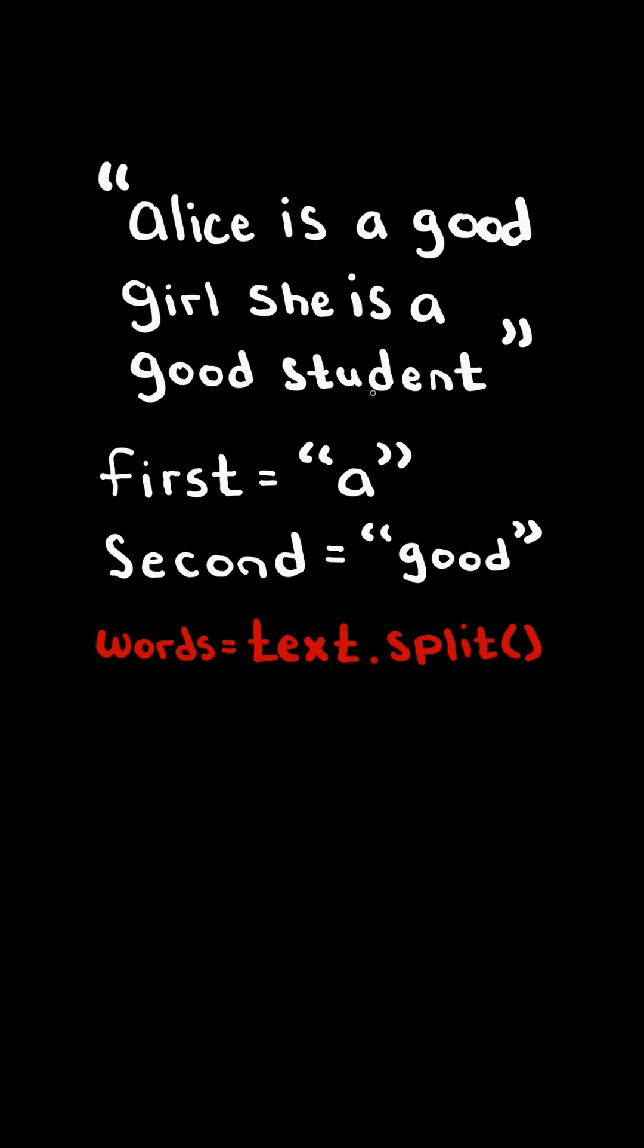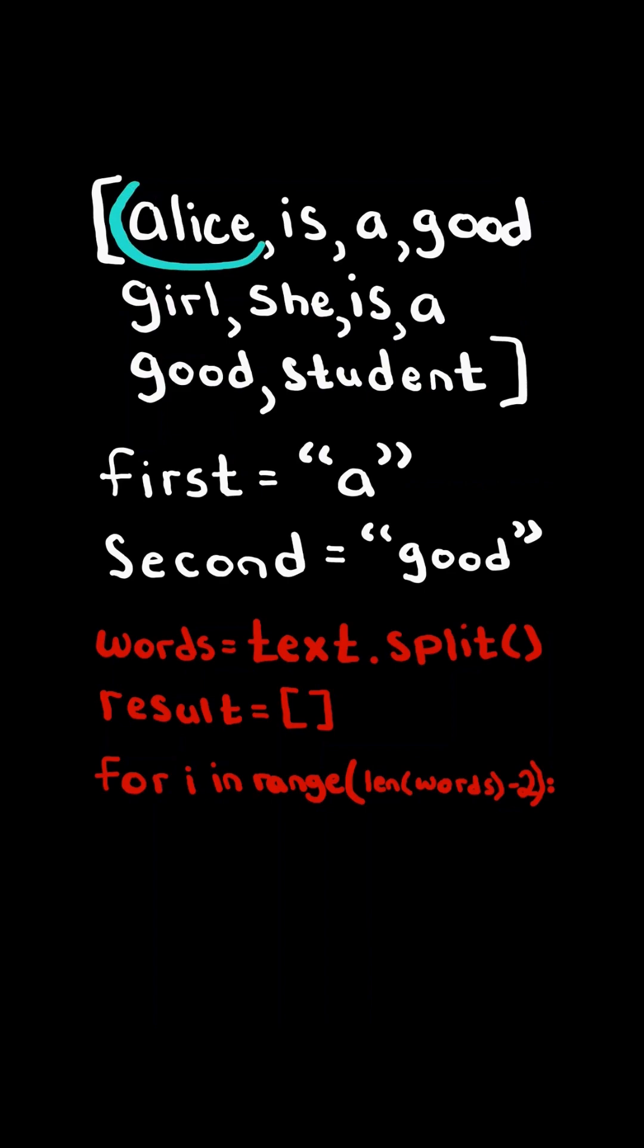First, we will split the text by a space, and this will give us a list of words. We then initialize an empty result list, and we iterate through the list of words from the first word up to the third last word.